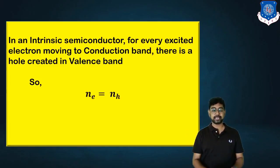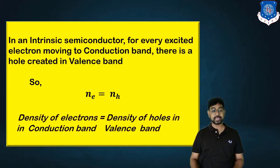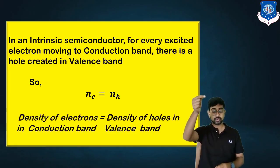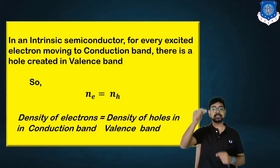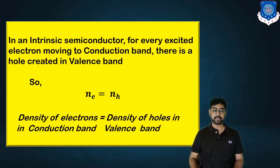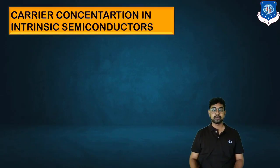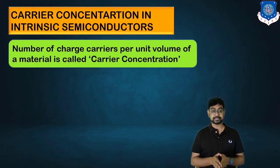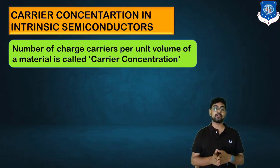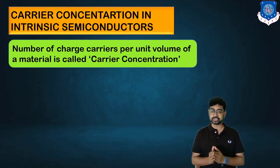That deficiency is always equal to the electrons present in the conduction band. So we can say n_e equals n_H, where n_e is the density of electrons in the conduction band that have moved, and n_H is the density of holes created in the valence band. The carrier concentration in an intrinsic semiconductor is the number of charge carriers per unit volume of a material — it can be electron or hole, or both.